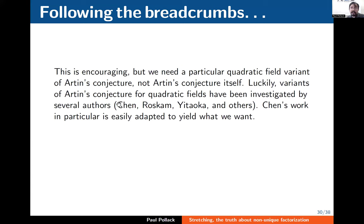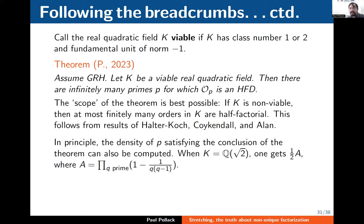This gives hope that the problem I'm interested in could be settled under GRH — and indeed it can be. I'm not working in the integers but in a quadratic field, so I need a quadratic field variant of Artin's conjecture. These have already been investigated. There's a paper of Yanmei Chen that gives almost exactly what I need; one tiny tweak to her argument suffices, and a nice theorem comes out.